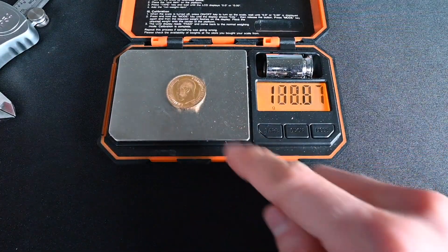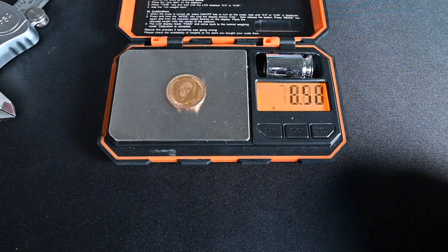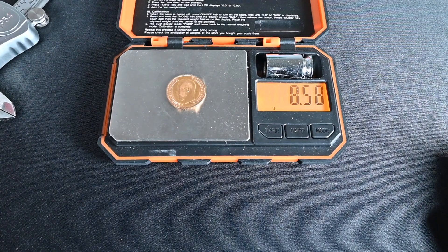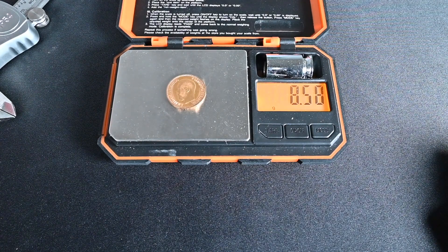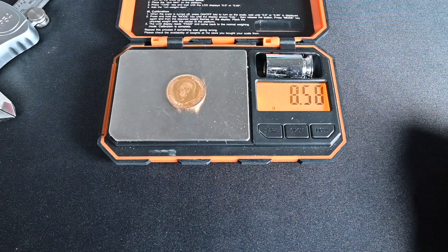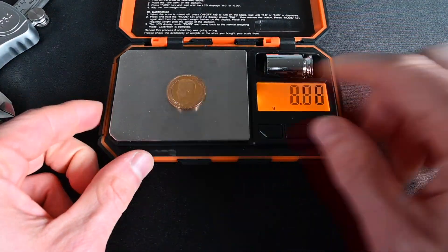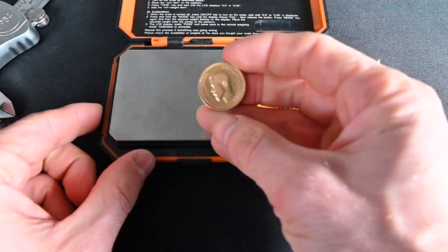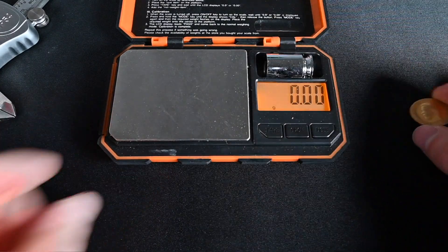So here we've got 8.57. That is definitely close enough, especially if I press on it, I'll probably be able to get it closer. Yeah, 8.58. That is definitely within the reasonable range. These are not always going to be perfect. And then obviously if the coin has had some wear on it, it might not be perfect as well. So this coin passes.